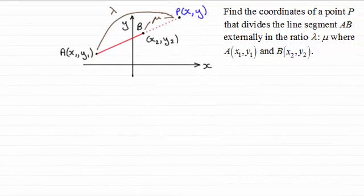Hi there, now in the previous video I showed you how to divide a line segment AB internally in the ratio lambda to mu, but in this video I want to extend that work and show you how we can find the coordinates of a point P that divides a line segment AB externally in the ratio lambda to mu.